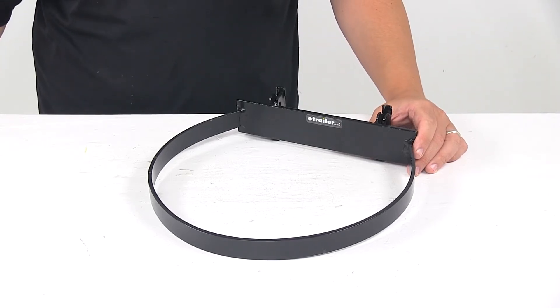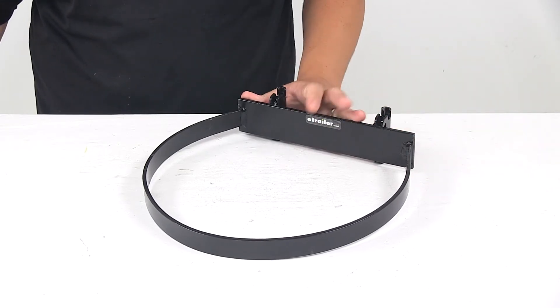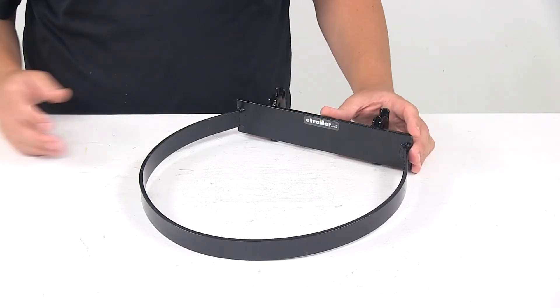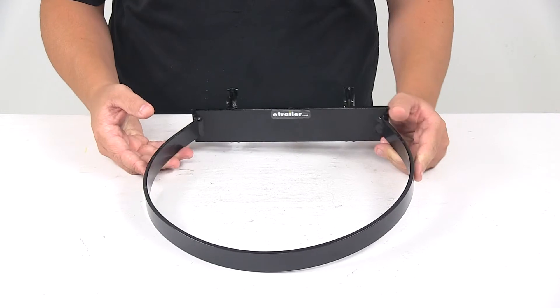Today we're taking a look at the Brophy 5-Gallon Bucket Holder for eTrack systems. This holder lets you secure a bucket to the wall of your trailer, shop, or garage. It keeps your bucket upright and out of the way to maximize space and prevent contents from spilling.